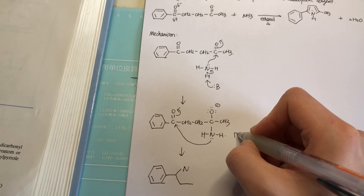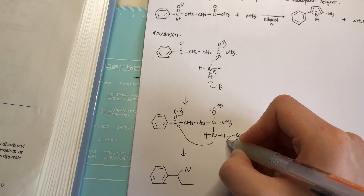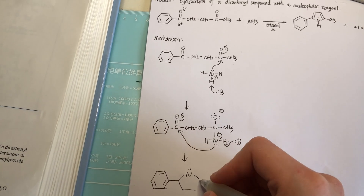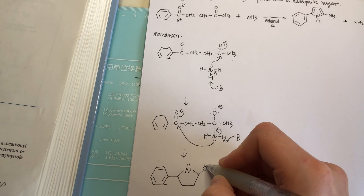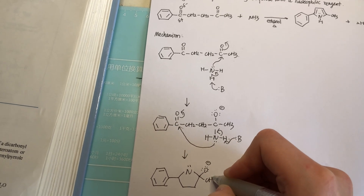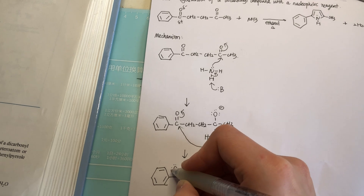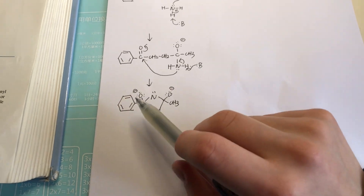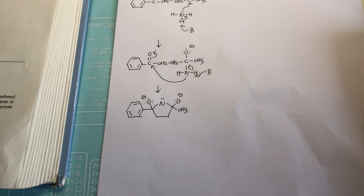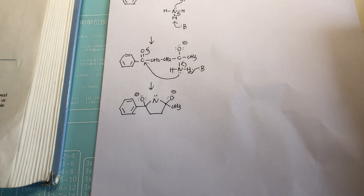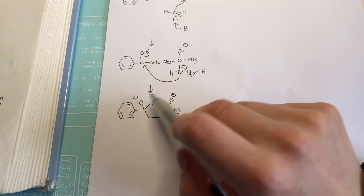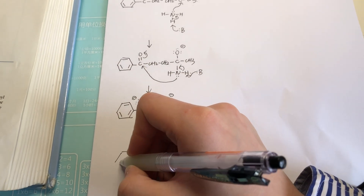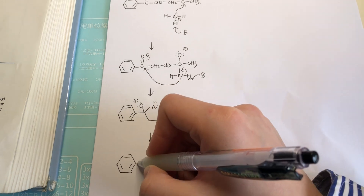Of course the base must take the proton here. Let's draw that back. Now we can see a simple ring forming here, and actually it will undergo the dehydration process. We can see all these oxygens here with a negative charge, and they will attract protons to come.